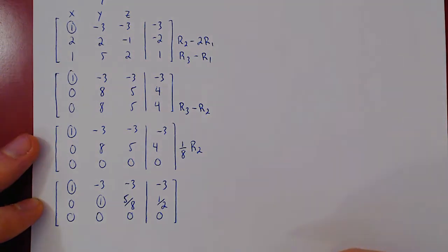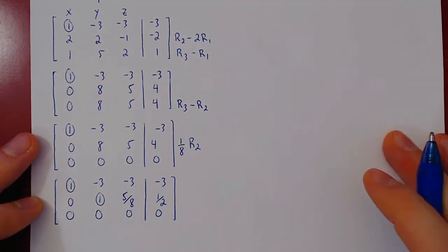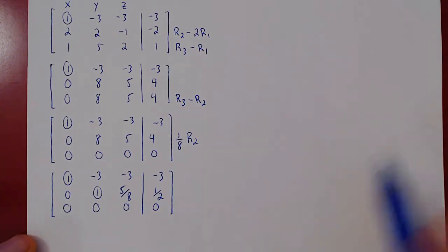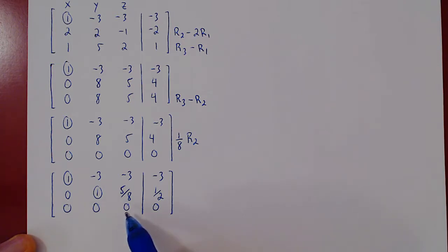And once again, if you notice, we are now done with Gaussian elimination. As the bottom row consists of all zeros, we cannot get a third leading one.